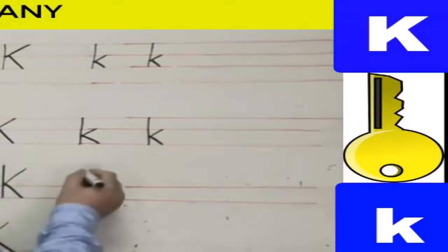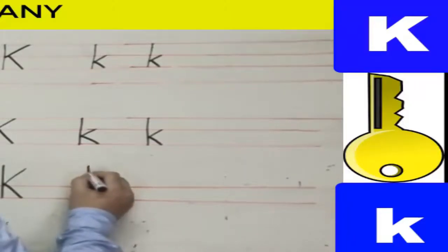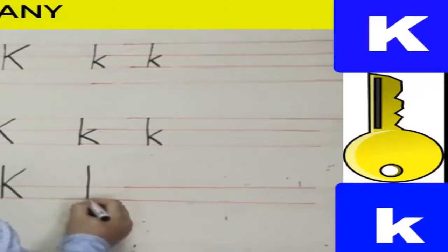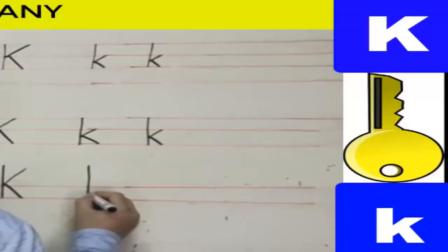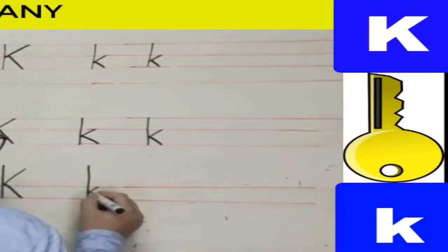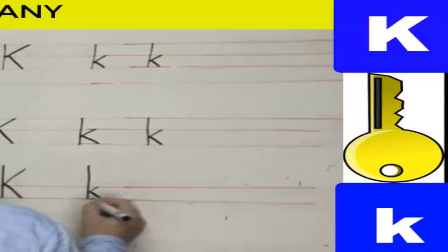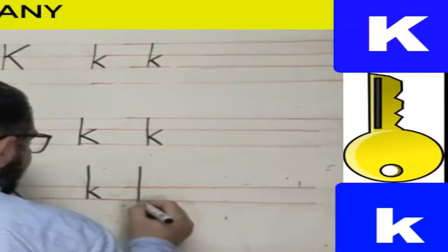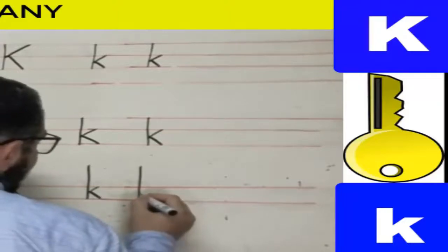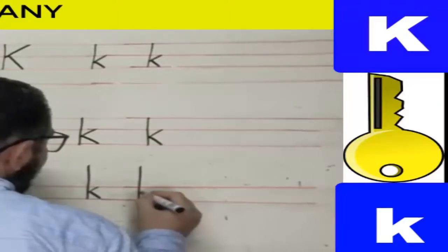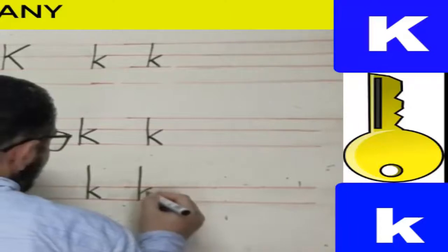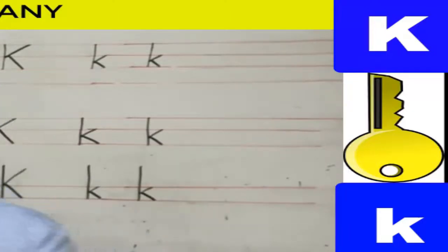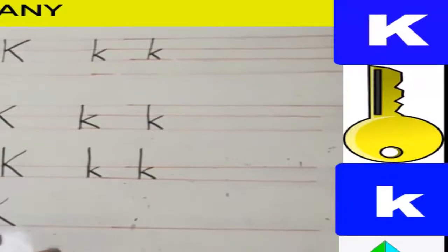When writing lowercase k on two lines, I start at the top, go down to the second line, then between the two lines make a diagonal to the first line and another diagonal back down. Again: start at the top, go down to the second line, then from the middle go with a diagonal to the first line and another diagonal to the second line.